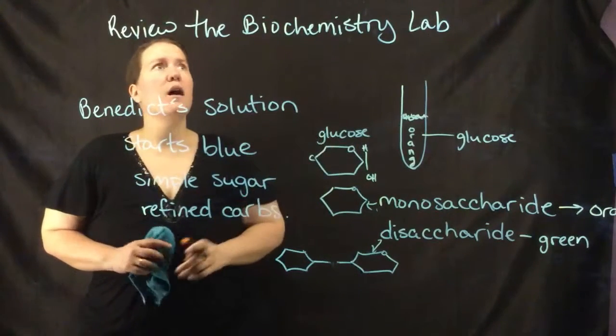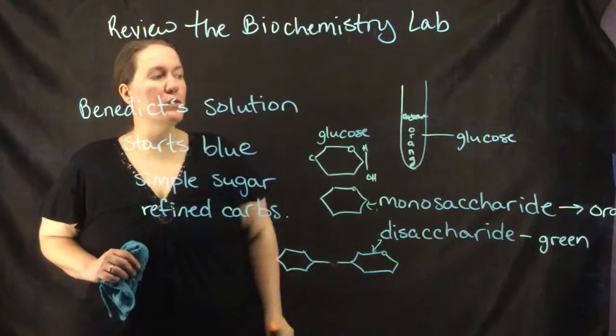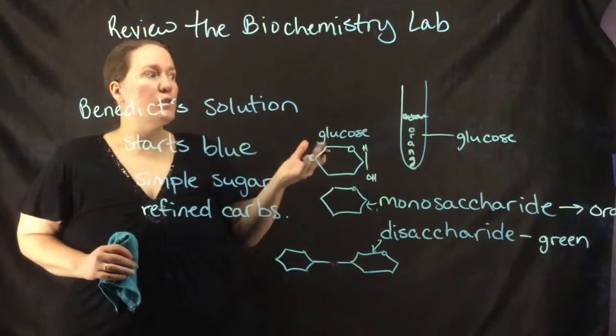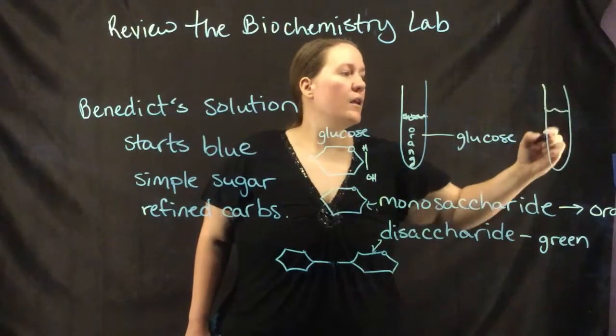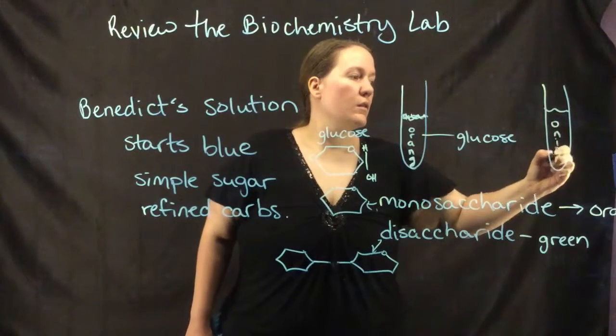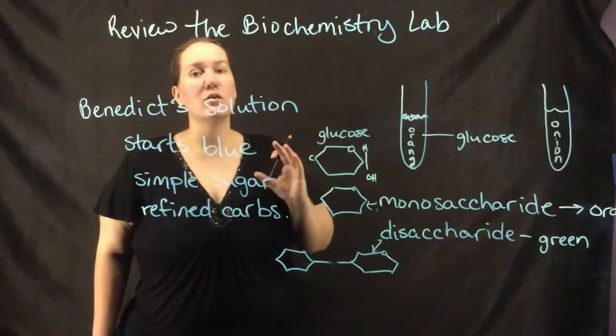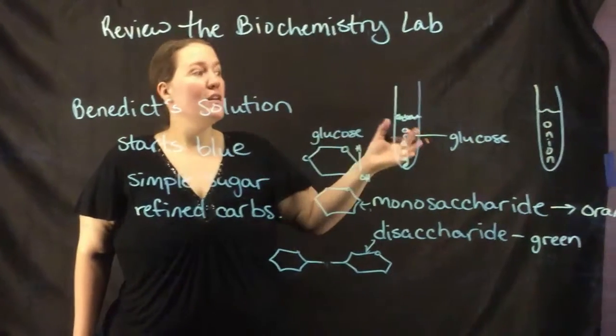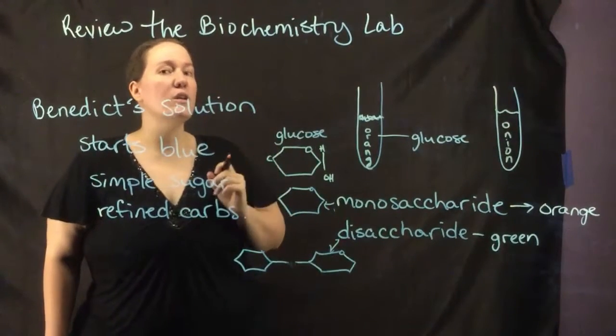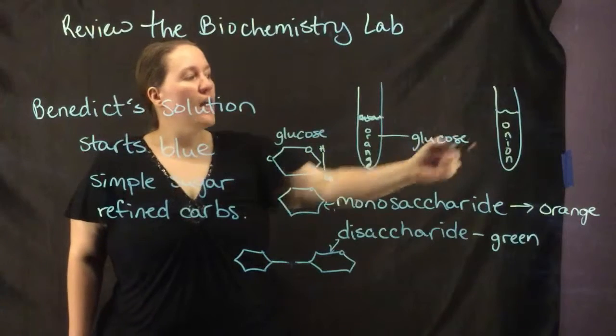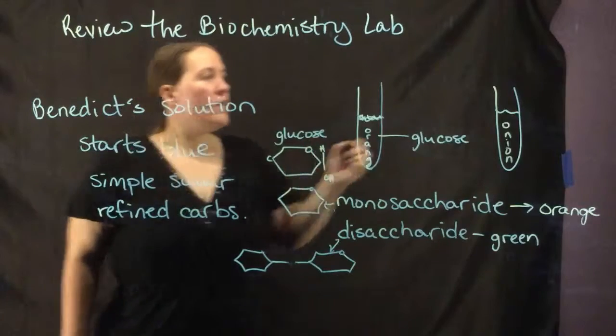The other positive tests that should have been for glucose or simple sugar should have been when you put in onion. Onion has a little bit of sweetness to it - I know it's kind of pungent so you might not realize it's got sweetness, but if you caramelize an onion you can really taste that sweetness. It has some simple sugars in it as well, and that should have been your other positive result.